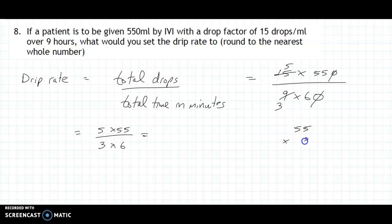55 multiply by 5. 5 times 5 is 25, carry the 2. 5 times 5 is 25, and 2 is 27. So we have 275 there on top, and below 3 by 6 is 18.